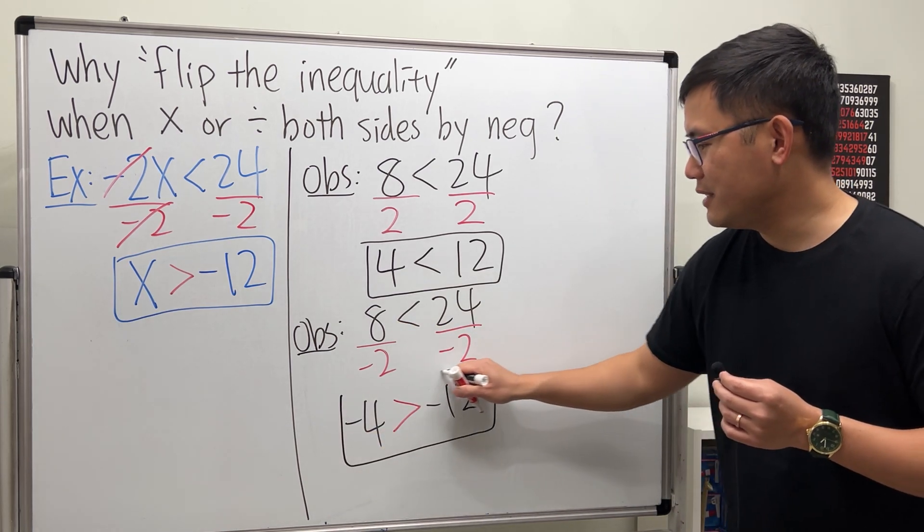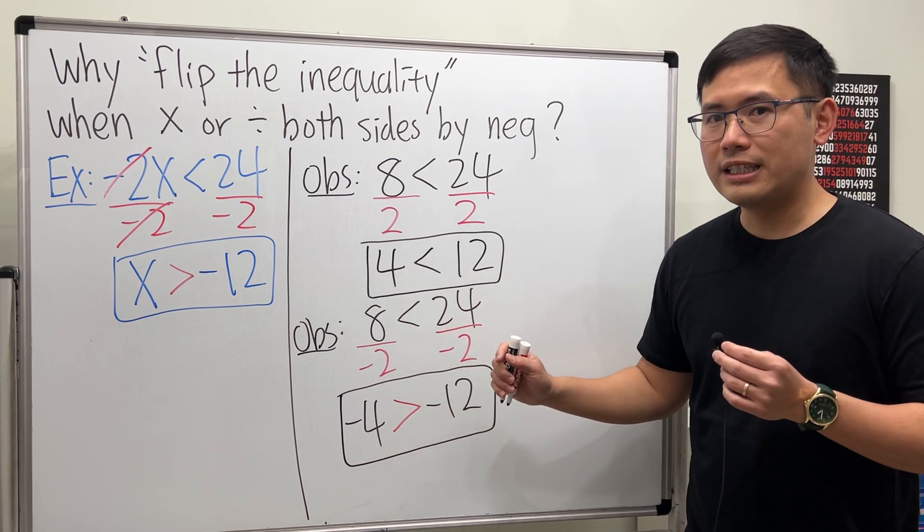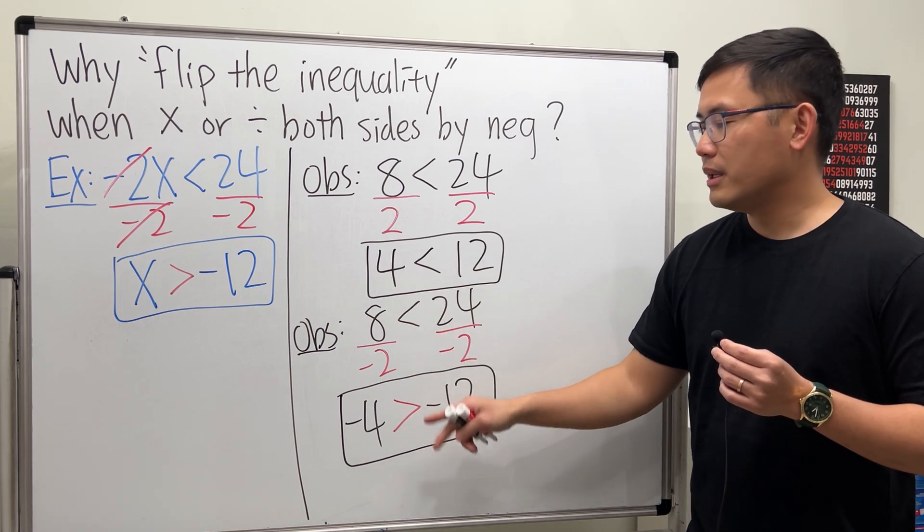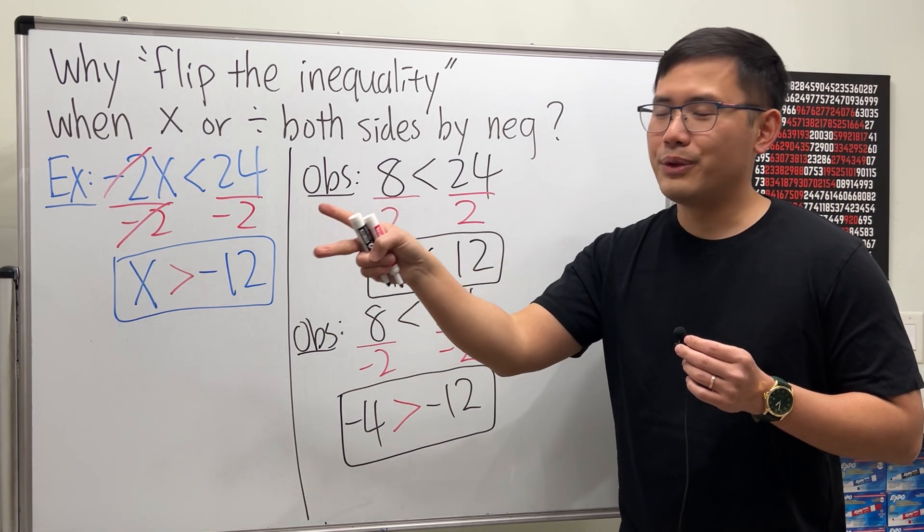Therefore, as you can see, whenever we multiply or divide both sides of an inequality by a negative number, just flip the inequality symbol. If you said less than, you do this. If it was a greater than, you do that.